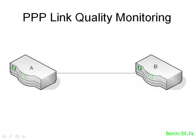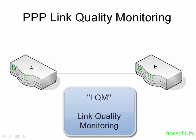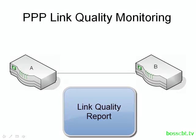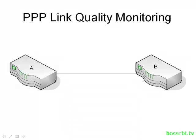Link quality monitoring is related to error detection. LQM is used to monitor the link, and if it gets to a point where too many errors are occurring, the routers can be configured to take that circuit out of service. LQM works like this: each router sends a report to the other one called a link quality report, and one of the statistics inside is the number of error frames that the router received.